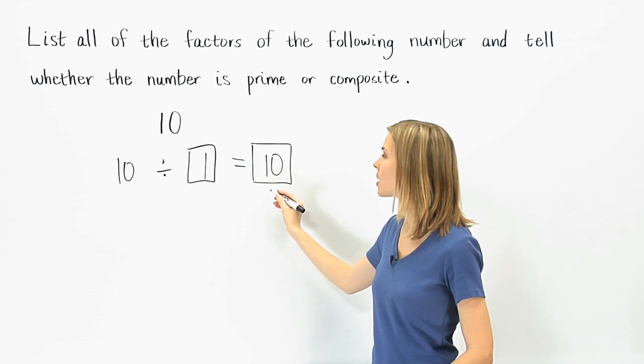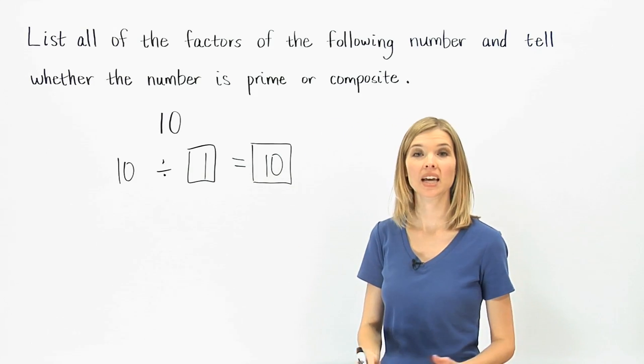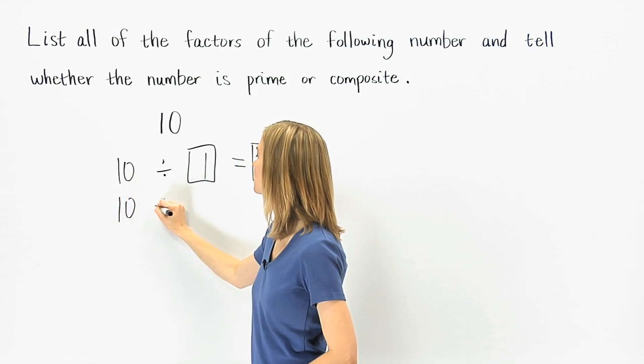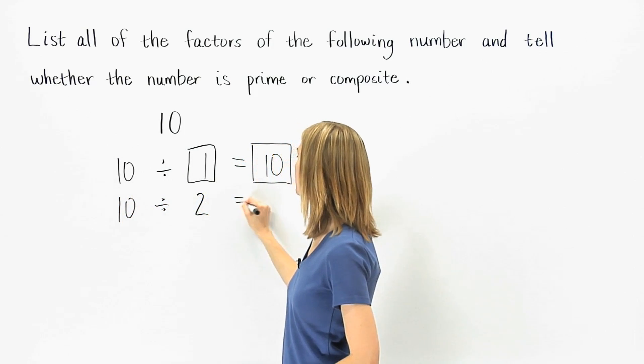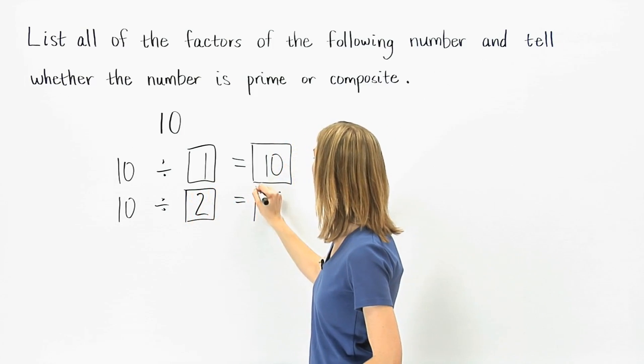This means that 1 and 10 are factors. Note that 1 and the number itself will always be factors of a given number. Next, divide 10 by 2, which gives us 5.